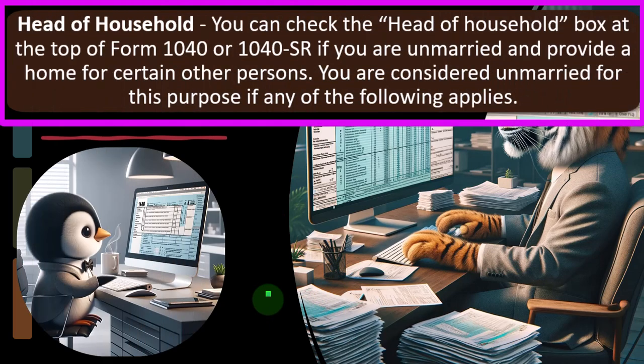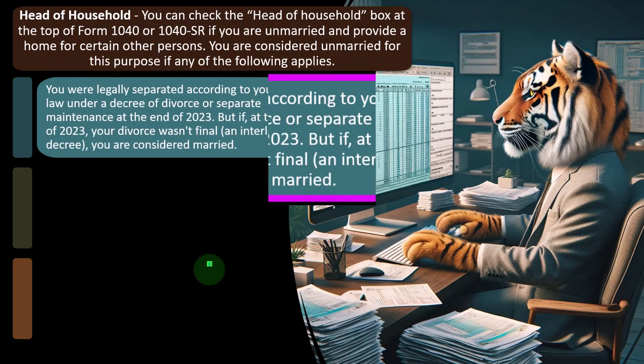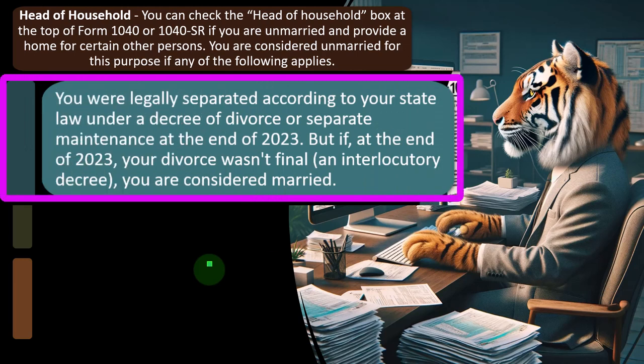Head of household applies when you are unmarried — meaning not married — and the options are single or head of household. Head of household usually requires some type of dependent and is more favorable than single. Check the head of household box on Form 1040 or 1040-SR if you are unmarried and provide a home for certain other persons. You are considered unmarried for this purpose if you were legally separated under a decree of divorce or separate maintenance at the end of 2023 — this is where state law comes into play.